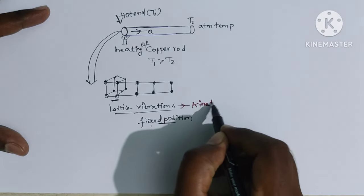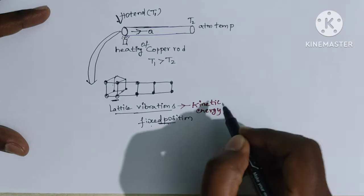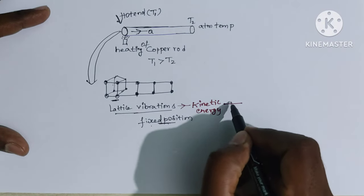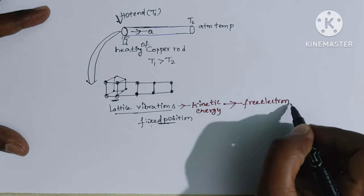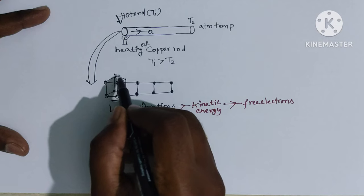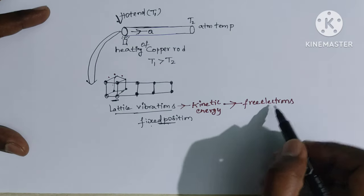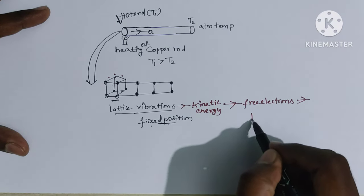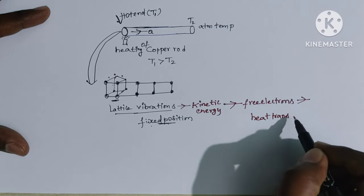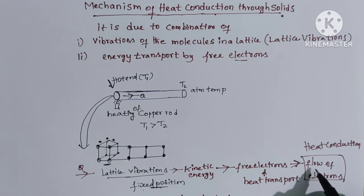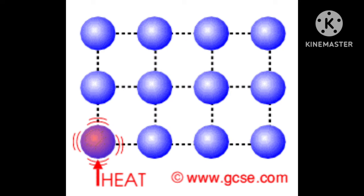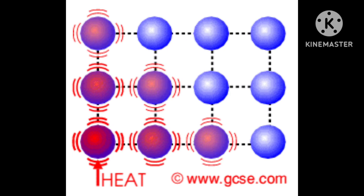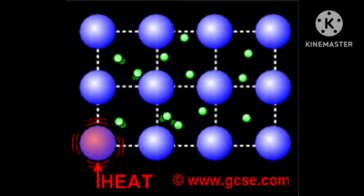The kinetic energy generated is received by free electrons around the lattice. Free electrons transport the heat energy. The flow of free electrons is nothing but heat conduction. Observe the graphical image of the lattice vibrations and heat transport by free electrons.